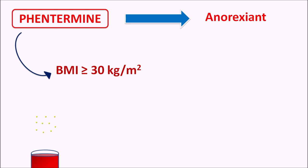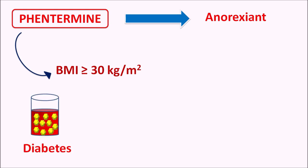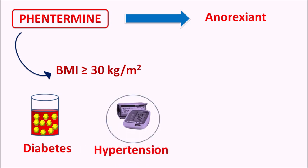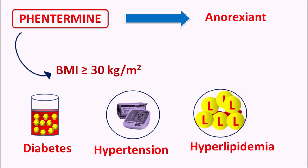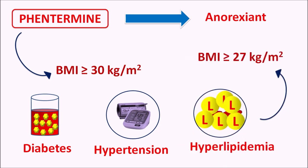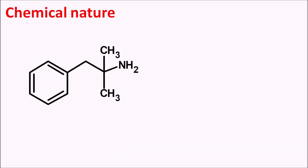In patients with any risk factors — such as hyperglycemia resulting in diabetes, controlled hypertension, or increased lipid levels resulting in hyperlipidemia — when the BMI is greater than or equal to 27 kg/m², the patient may have more risk for cardiovascular complications. In those patients, Phentermine can also be used.